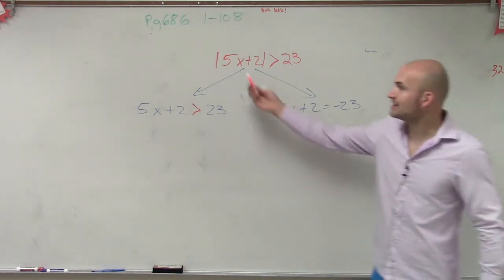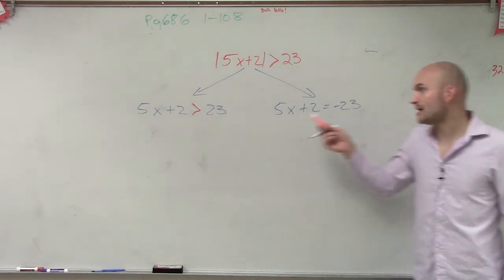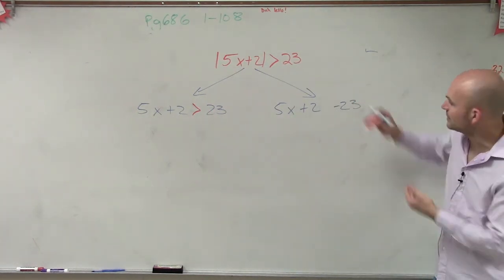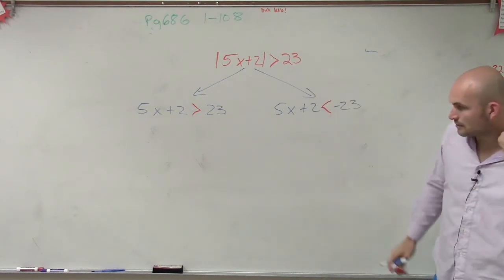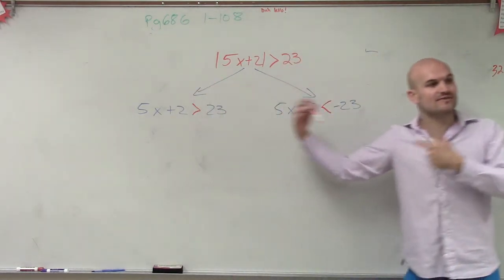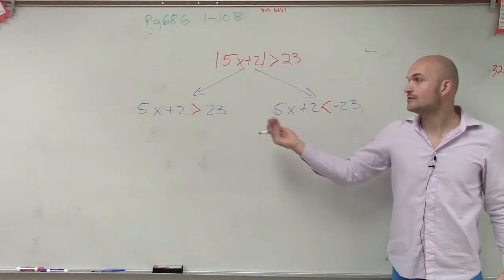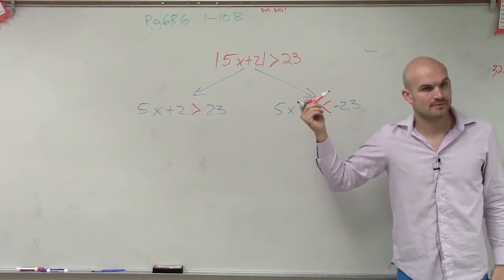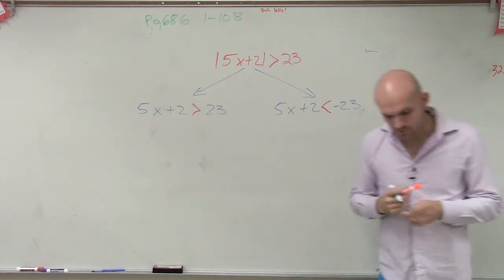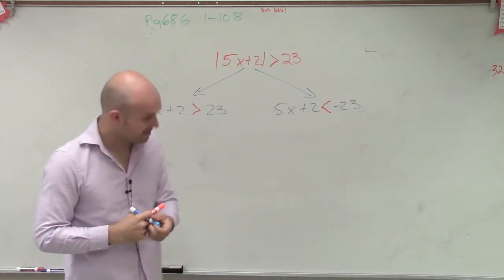So when we're dealing with inequalities, the positive case remains the same. But when I'm going to solve for the negative case, I have to make sure that I flip the sign. It's the same thing — you set up a positive and a negative, but for inequalities, you have to make sure you flip the sign. I think we went over in class why that works. If you guys can just remember that.